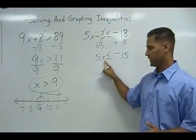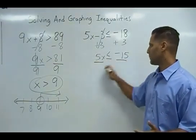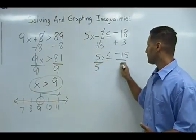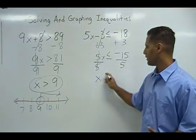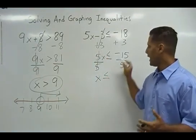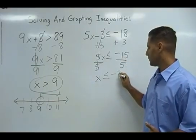Now to further isolate our variable, we do the opposite of multiplying by 5, which is to divide both sides by a positive 5. This side leaves us with only x, bring down our inequality sign, and negative 15 divided by positive 5 is negative 3.